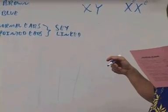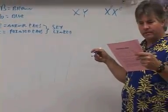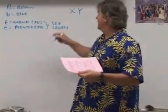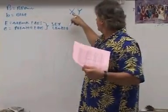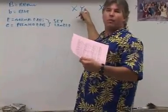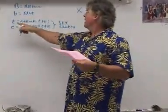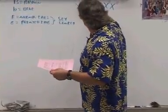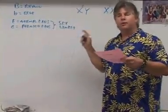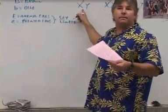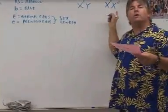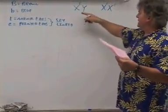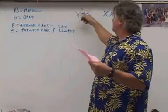Now for the male — it says a homozygous brown-eyed, normal-eared man. The man has normal ears but he only has one X, so you never put anything over the Y. Since he only has one X, he only gets one copy of this gene. Since he has normal ears, he gets a big E: X-big-E. Males only get one copy of a sex-linked trait because they only have one X, whereas females can have two copies because they have two X's. So the mother is X-little-e, X-little-e, and the male is X-big-E, Y.